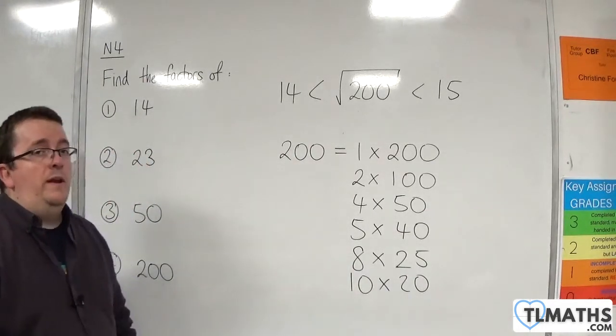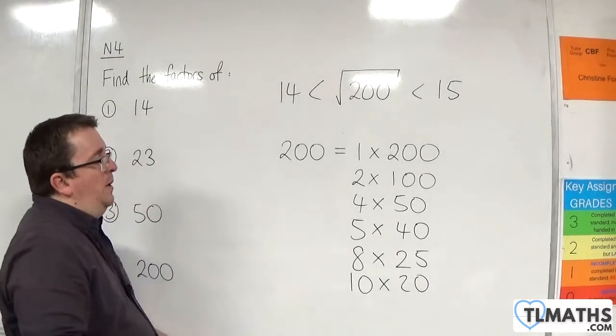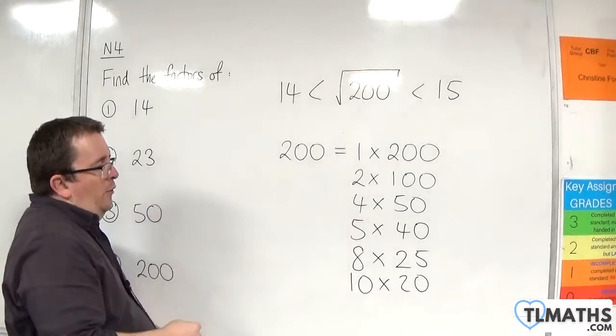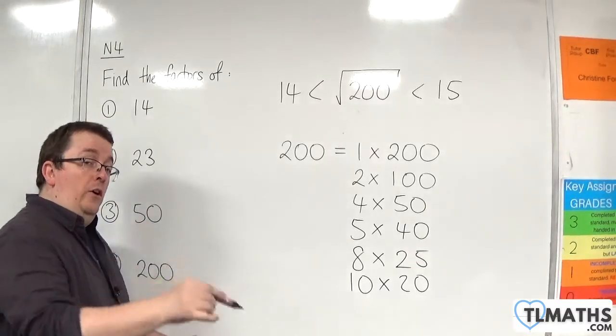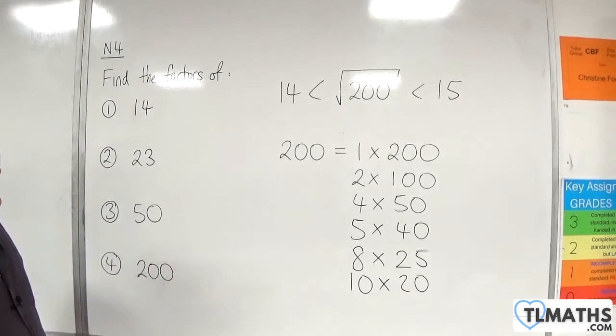10 will definitely go in 20 times. 11 won't go in. That doesn't work. Again, you could test that one. 12, well, 12 can't go in because 3 didn't go in. It's in the 3 times table. It's a multiple of 3, so that won't work.